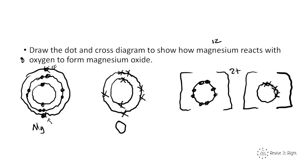Oxygen is going to gain those 2 electrons. We draw the original outer shell of oxygen with its 6 electrons, then add the 2 electrons received from magnesium. Because it has gained 2 electrons, it now has a 2− charge. They now ionically bond because they are attracted to each other by an electrostatic force — they are oppositely charged.